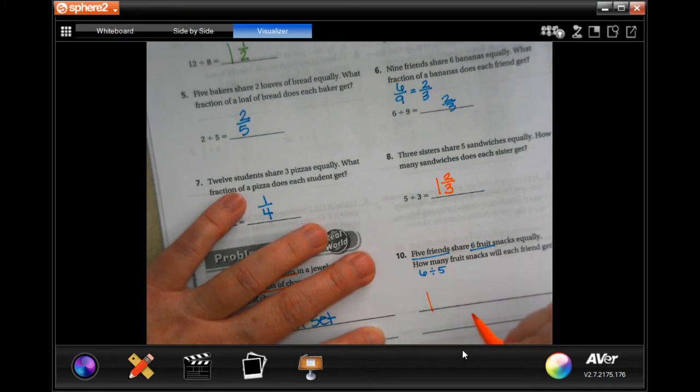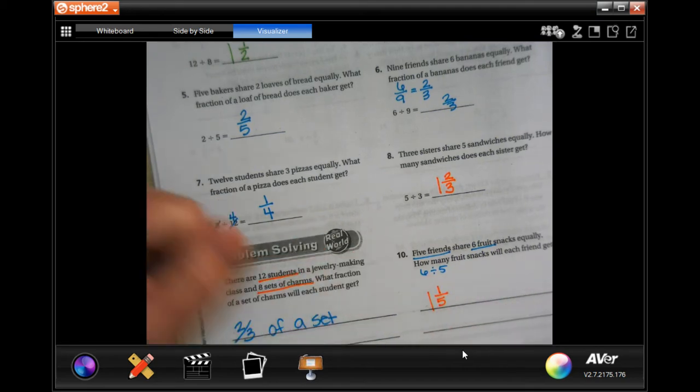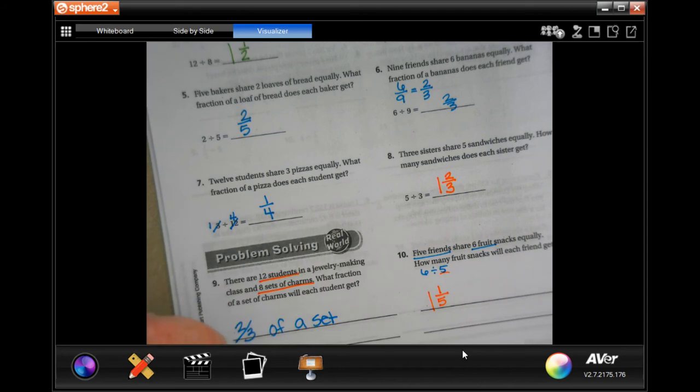One times five is five, and six minus five is one. And my denominator would be five. The second number is your denominator.